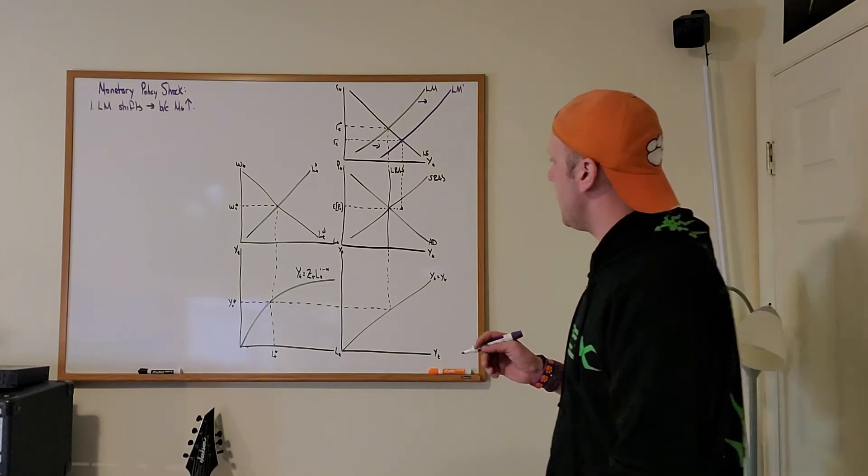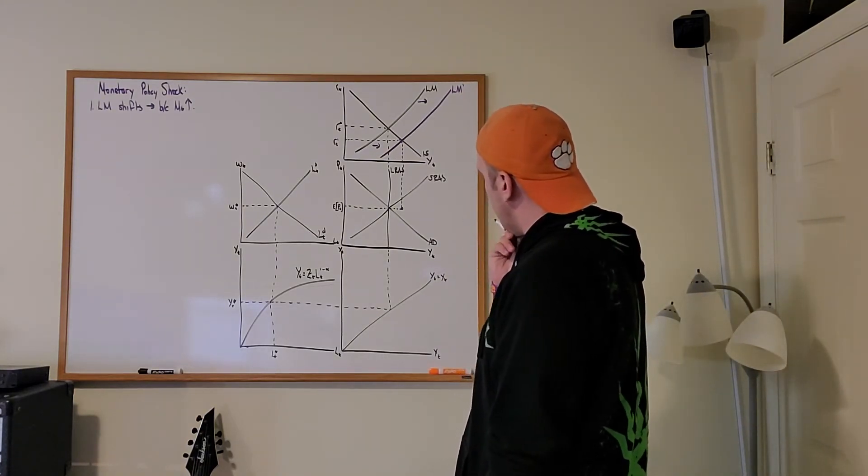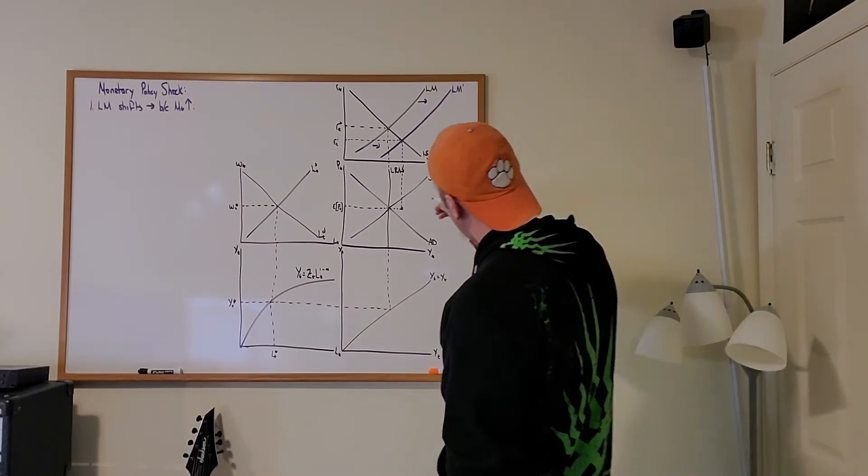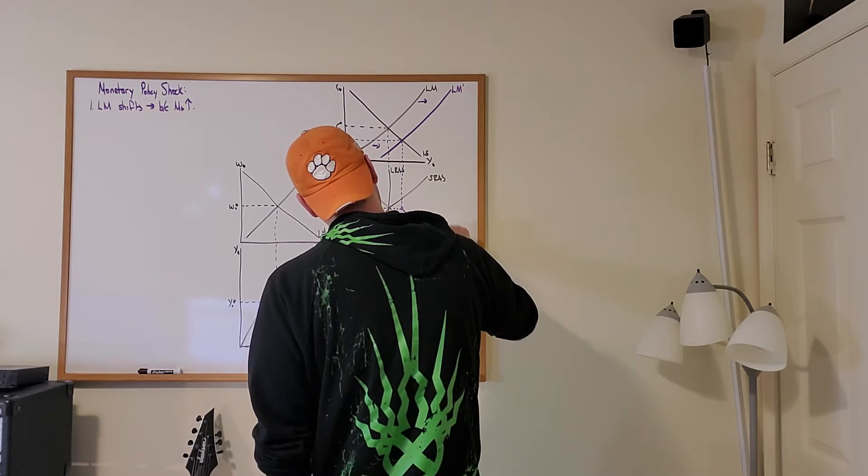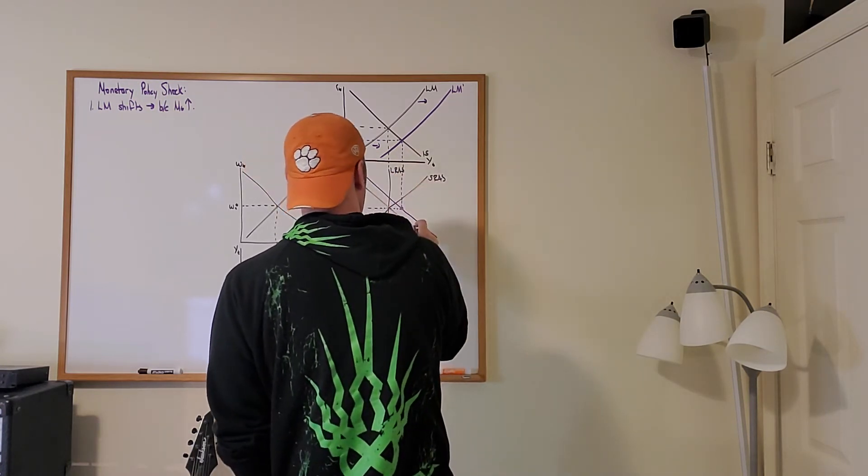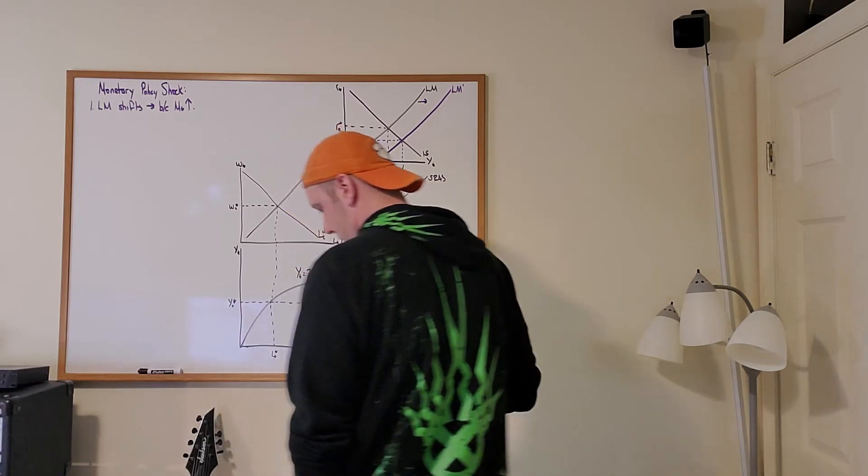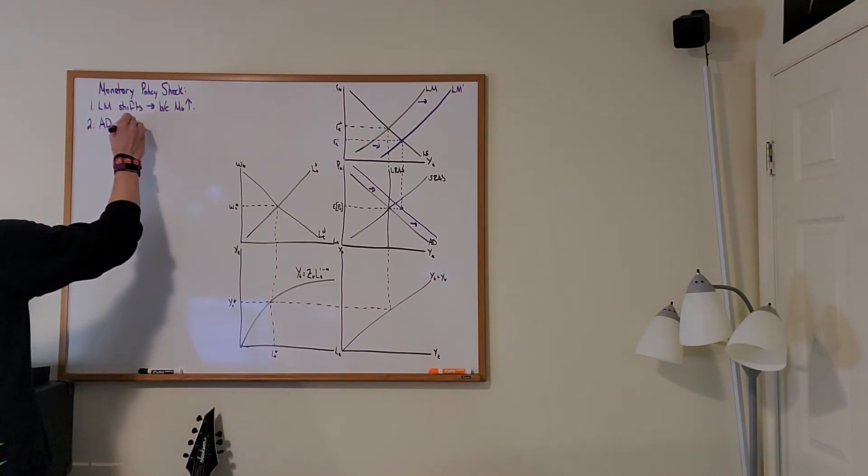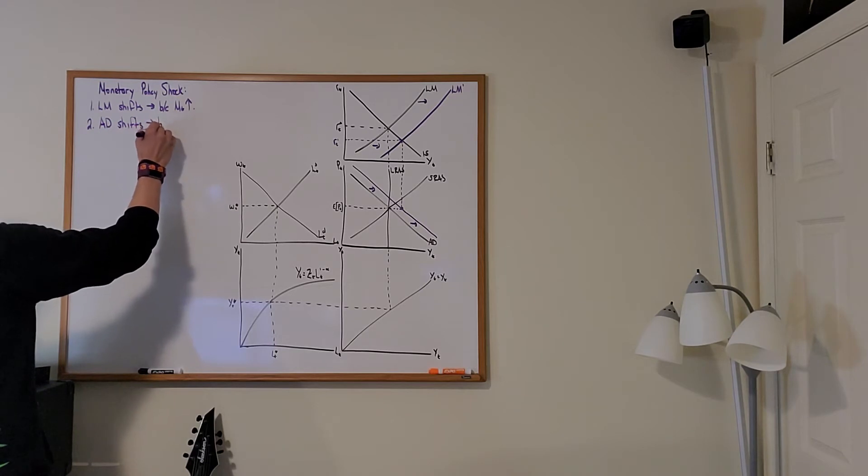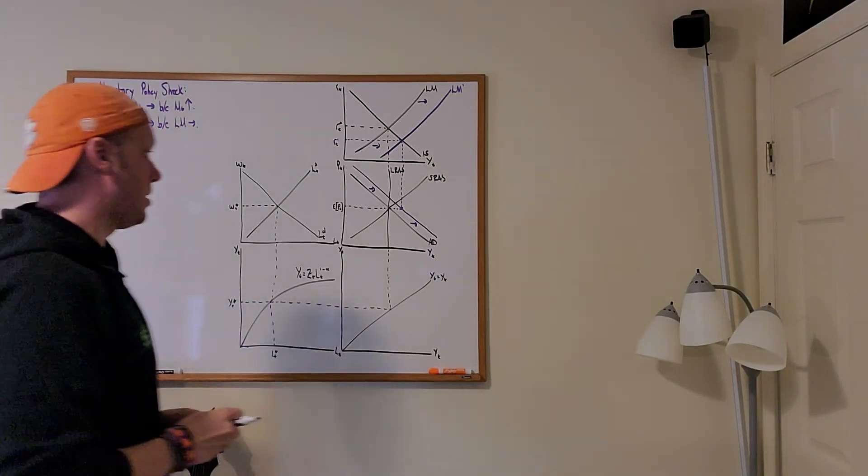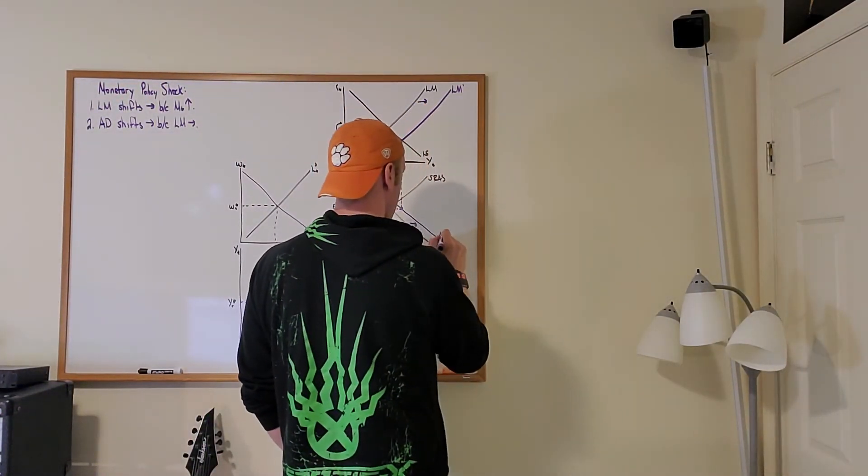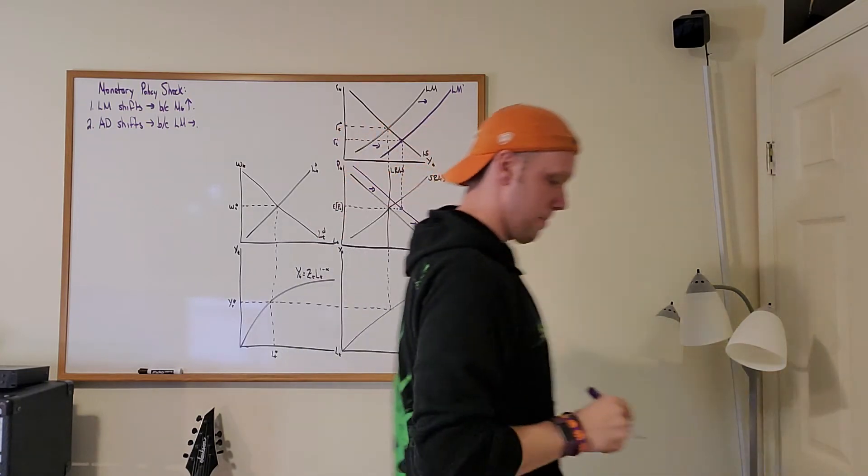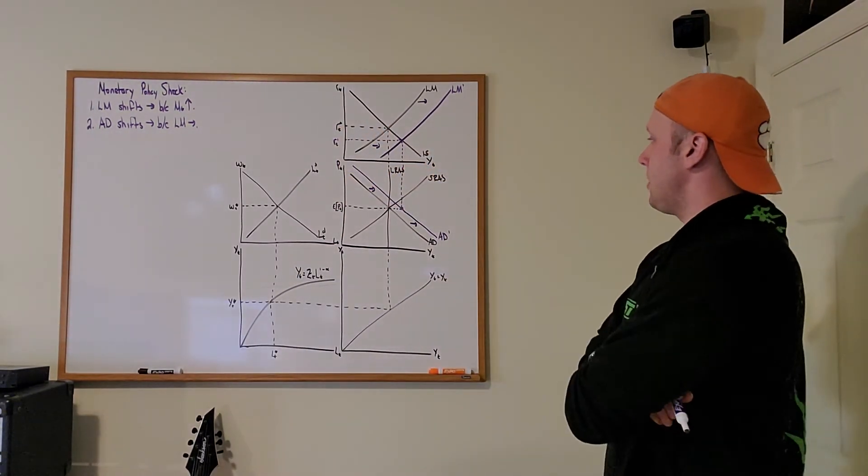However, what we see is, well, what's going on? Well, first off, here's what's going on. When the LM curve shifts out, remember the aggregate demand curve shifts out. So, that's where our new aggregate demand is. We'll call it AD1. Like that. So, that's where we currently are.